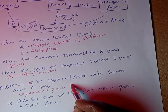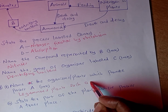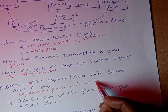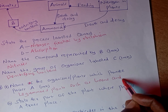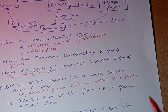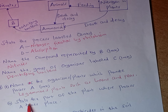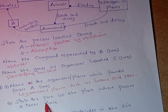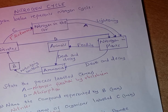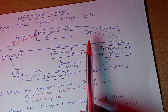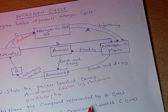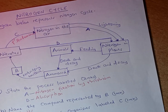Part D, roman numeral 2: state the part of the plant where process A takes place. Process A is nitrogen fixation. Nitrogen fixation takes place in the root nodules of leguminous plants.